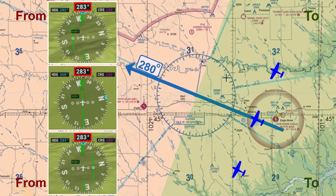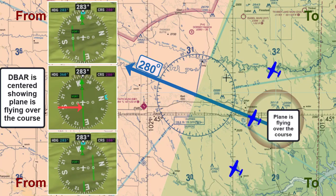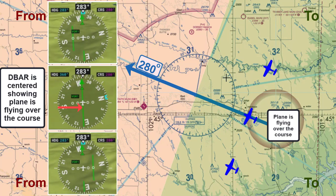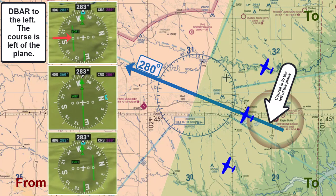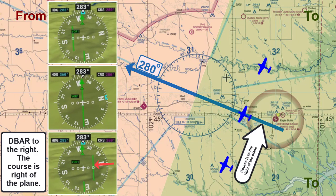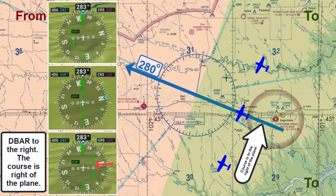The course says 283 degrees because we are crabbing slightly to the right to compensate for winds. Notice the middle plane's D-bar is centered with the rest of the CDI needle, indicating we are flying right over the 280 degree radial. The plane to the right has its D-bar displaced to the left of center, indicating the 280 degree radial course is off to the left. The plane on the left side has its D-bar displaced to the right of center, indicating the 280 degree radial course is off to the right.